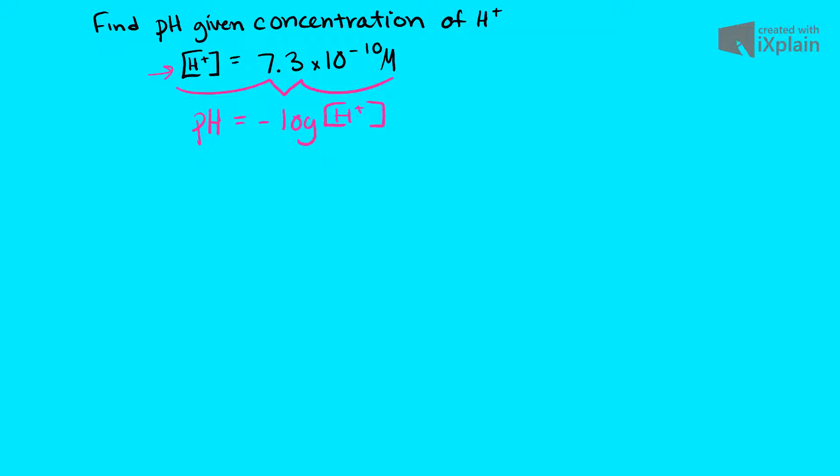So all we have to do for this problem is we take our formula pH equals the negative log and we want to plug this number in for our concentration of hydrogen. So negative log times 7.3 times 10 to the negative tenth.